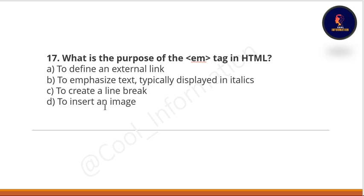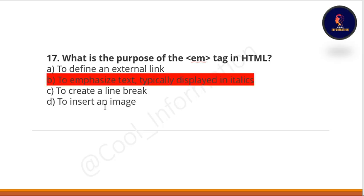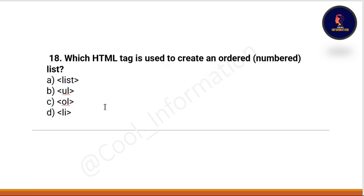Next question: what is the purpose of the em tag in HTML? I think you already know the answer — please comment your answer below. Option A: to define an external link. Option B: to emphasize text, typically displayed in italics. Option C: to create a line break. Option D: to insert an image. The correct option is B — to emphasize text, typically displayed in italics.